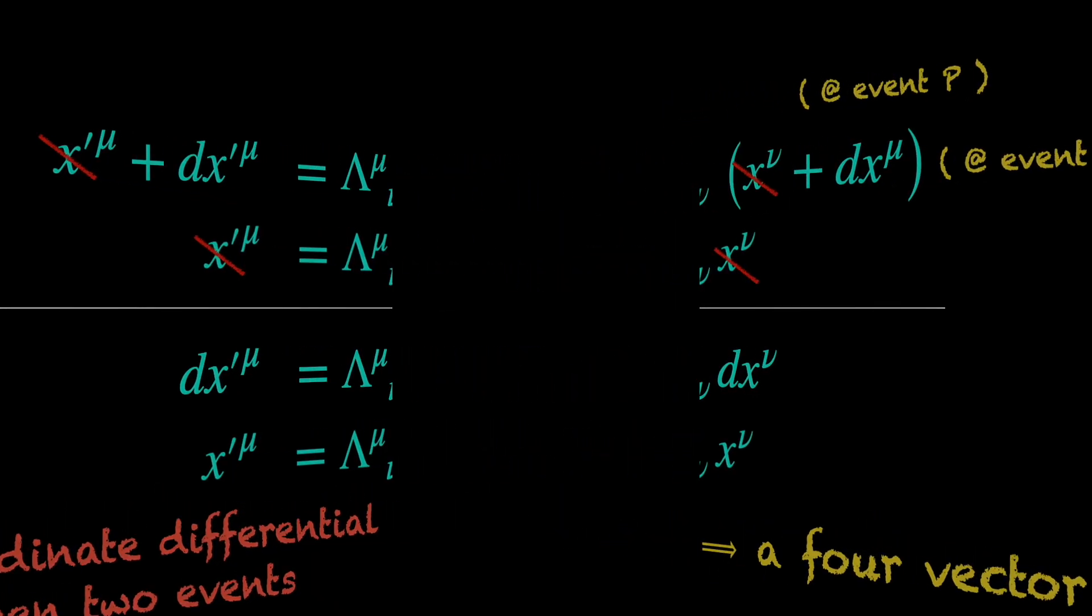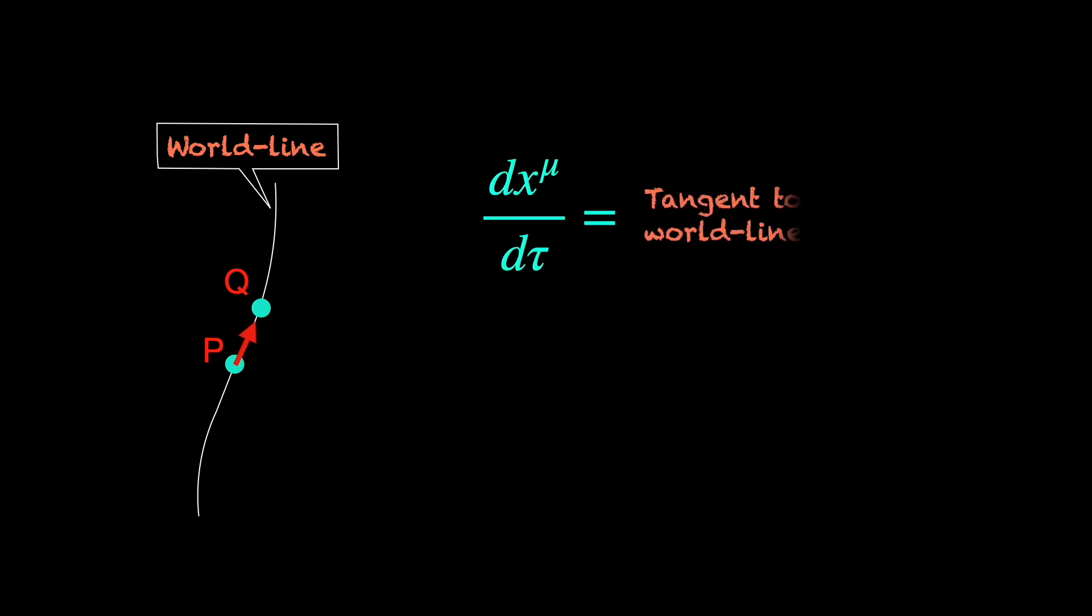Moving on to the second example. Think of a massive particle moving around in space-time. If the two events P and Q happen to be on its space-time trajectory, also known as the world line, then the quantity dx mu d tau represents a tangent to this world line at the event P.